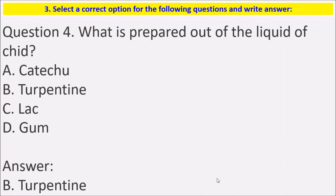Next question: what is prepared out of the liquid of chit? The answer is turpentine is prepared out of the liquid of chit.